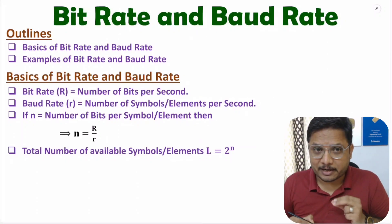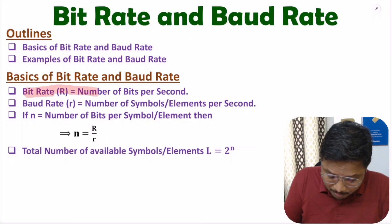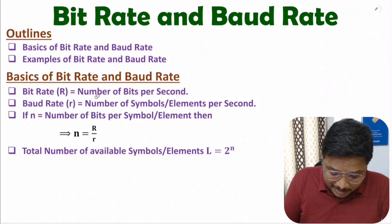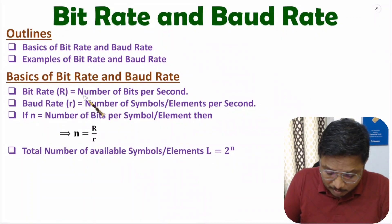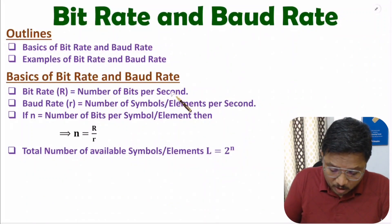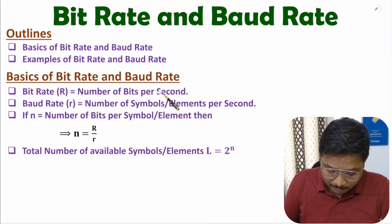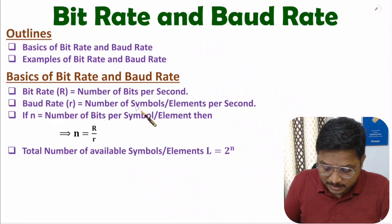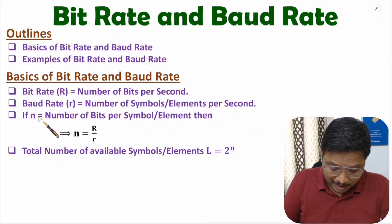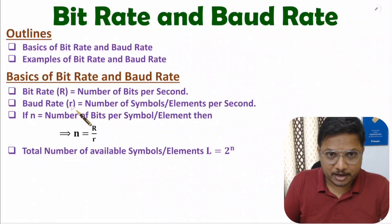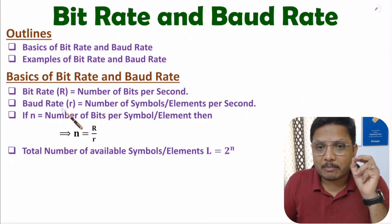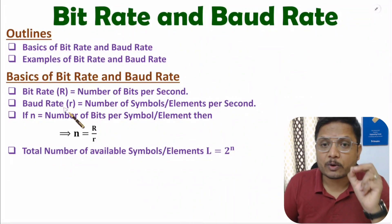Let me define bit rate. Bit rate is the number of bits per second — I denote bit rate by capital R. Baud rate is the number of symbols per second, sometimes also referred to as elements per second. If you have n number of bits per symbol, then n equals bit rate divided by baud rate.